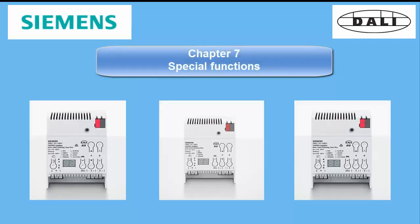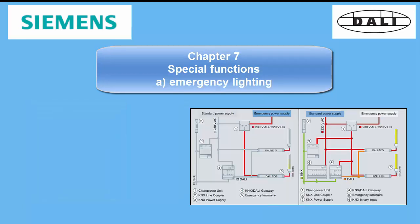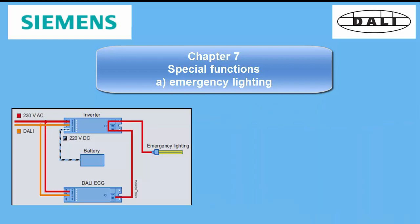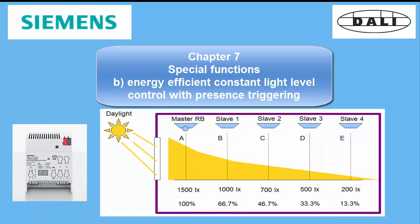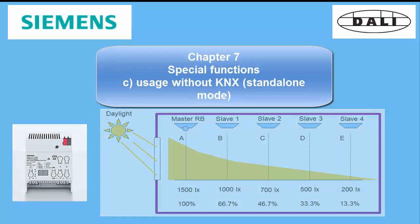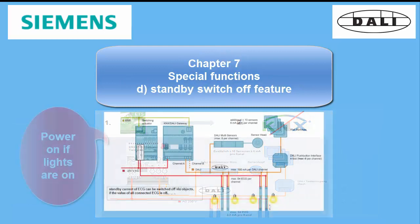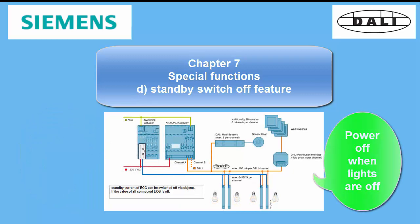Chapter 7: Special Functions. In this chapter, four options of usage are presented: a) Emergency lighting, b) Energy efficient lighting through presence triggering, c) The usage without KNX, and d) The standby switch-off feature.